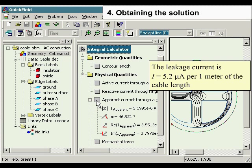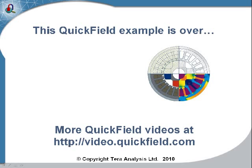Click here to calculate the current. The leakage current is 5.2 microamps per 1 meter of the cable length. Thank you.